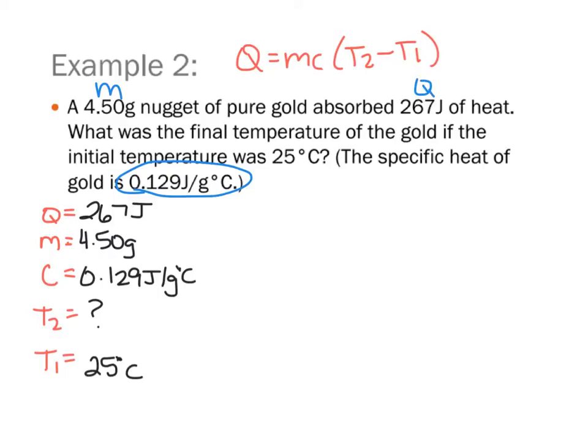What is the final temperature? So what is my T2 of the gold if the initial temperature was 25 degrees Celsius? And again, my specific heat is 0.129. So in this case, I'm actually going to be solving for the variable T2.